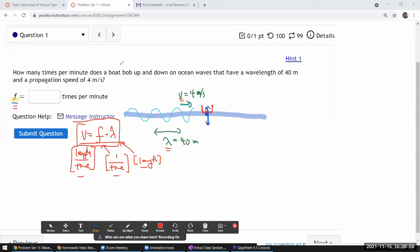So armed with this, we can figure out the frequency should be - frequency at which this point oscillates up and down should be - wave speed divided by wavelength.